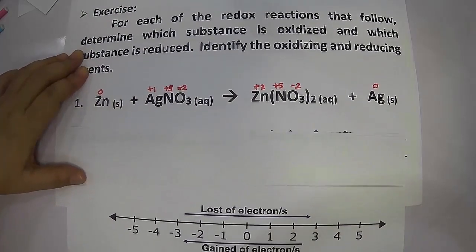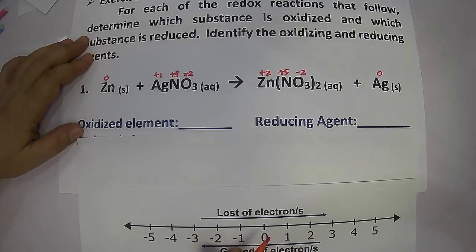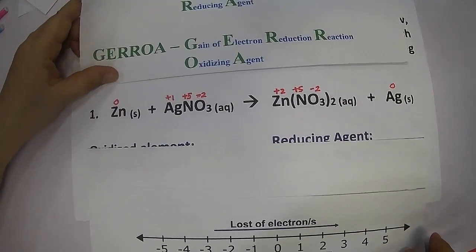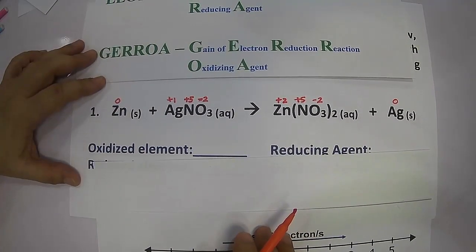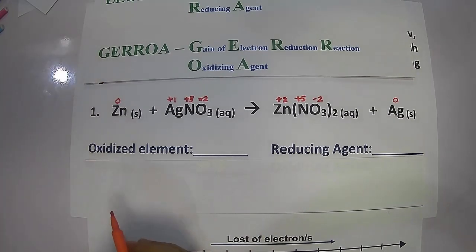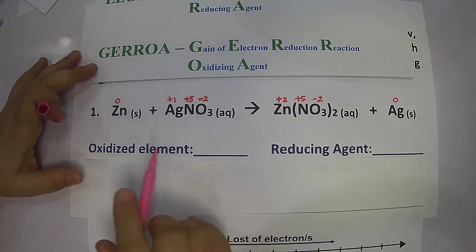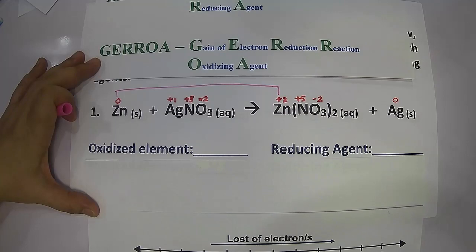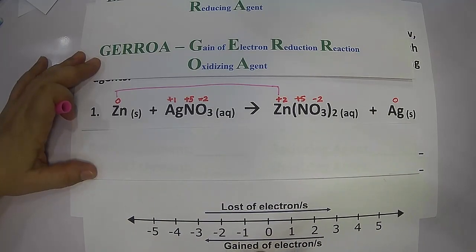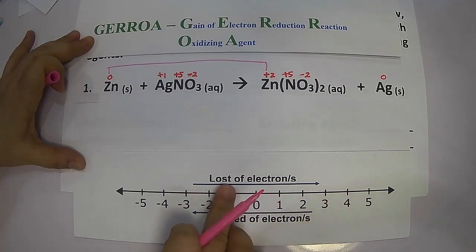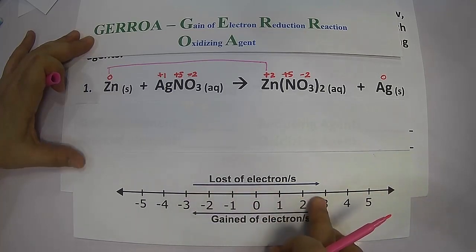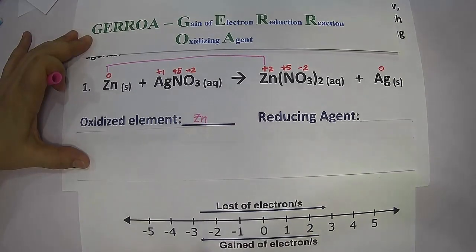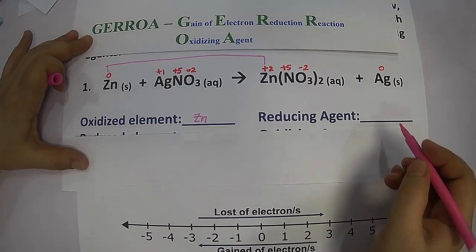Using the number line, zinc goes from zero to positive two — moving to the right of the number line — so there is a loss of electron. When you lose electron, you undergo oxidation. Therefore, it is the zinc element that is oxidized, and it is therefore the reducing agent.